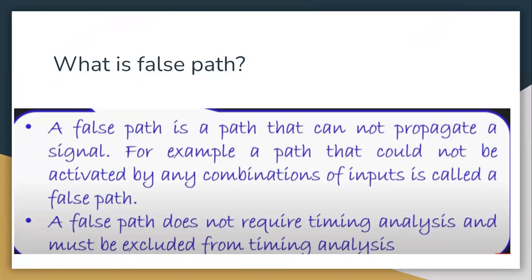Why do we need to detect false paths? Because if we identify which false paths exist in the circuit, we can eliminate them and make our timing analysis more efficient. So it's very necessary to identify the false paths in a circuit. Let's look at this with the help of an example.